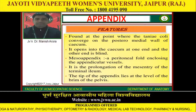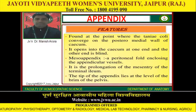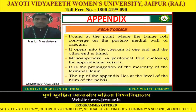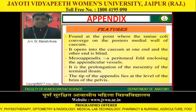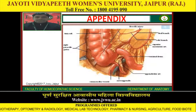Features: The appendix is found at the point where the taenia coli converge on the posterior medial wall of the cecum. It opens into the cecum at one end, and the other end is blind. The meso-appendix is a peritoneal fold enclosing the appendicular vessels; it is the prolongation of the mesentery of the terminal ileum. The tip of the appendix lies at the level of the brim of the pelvis.